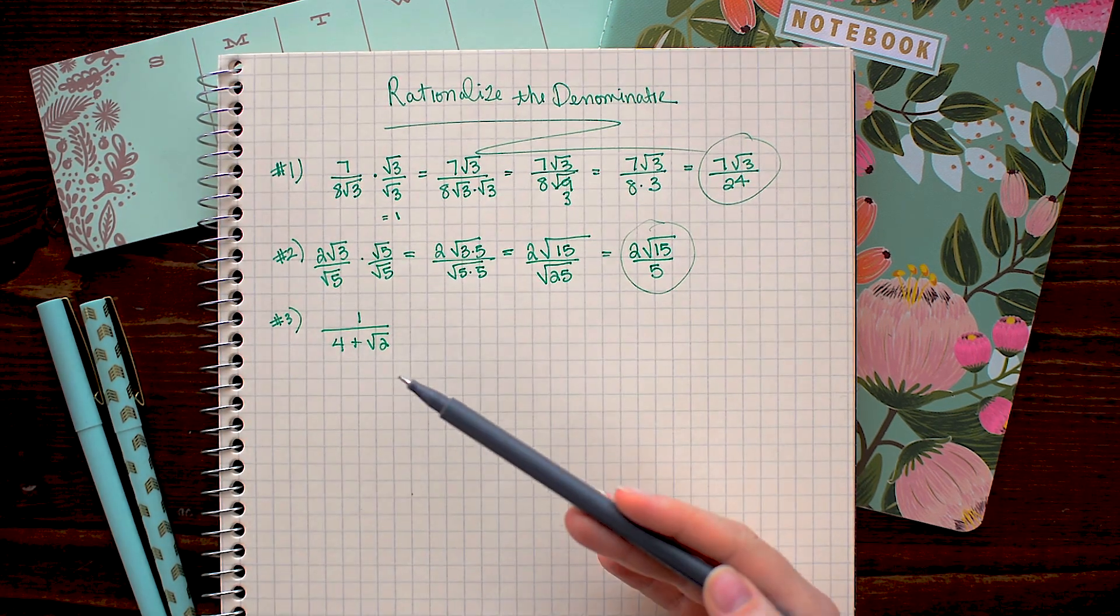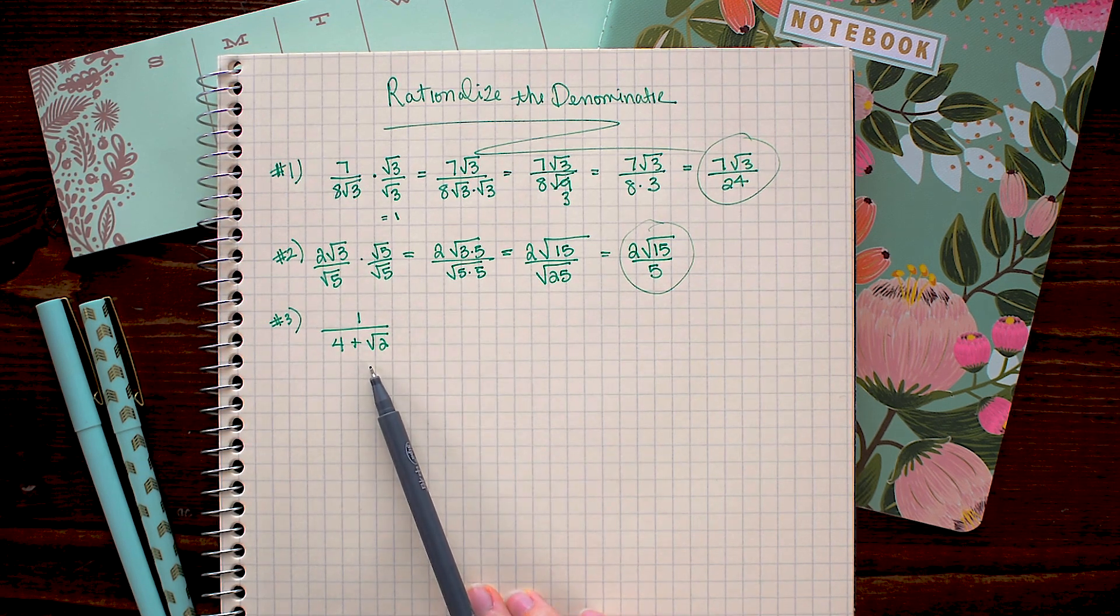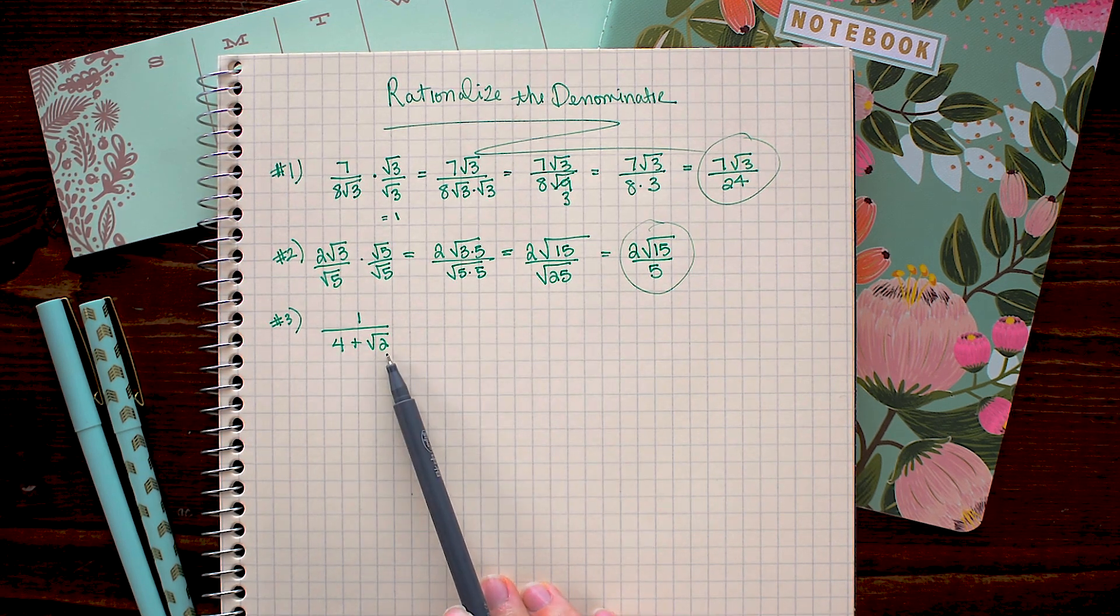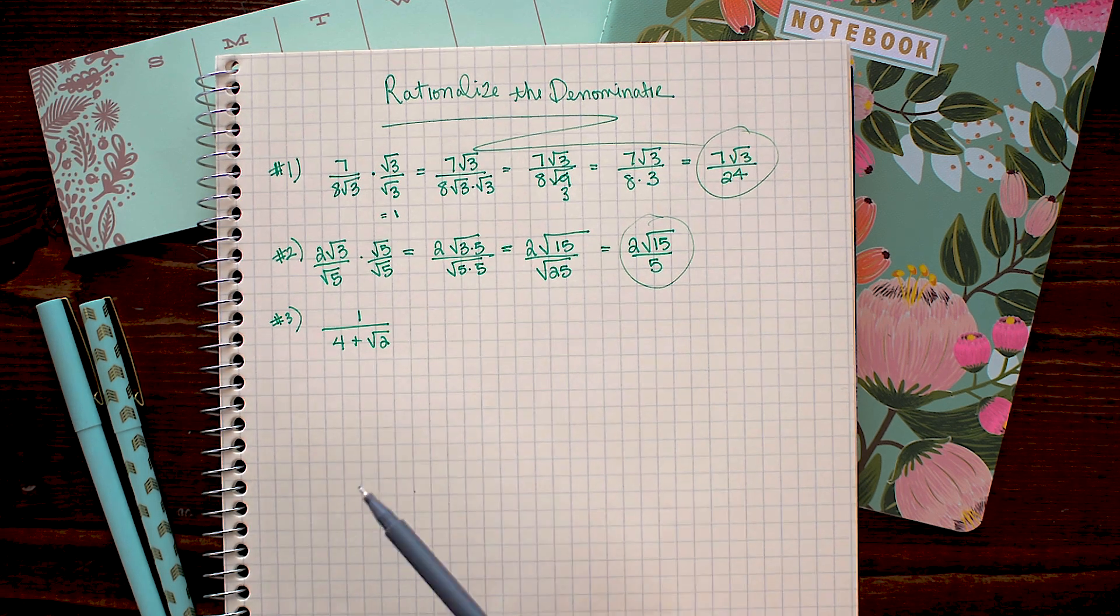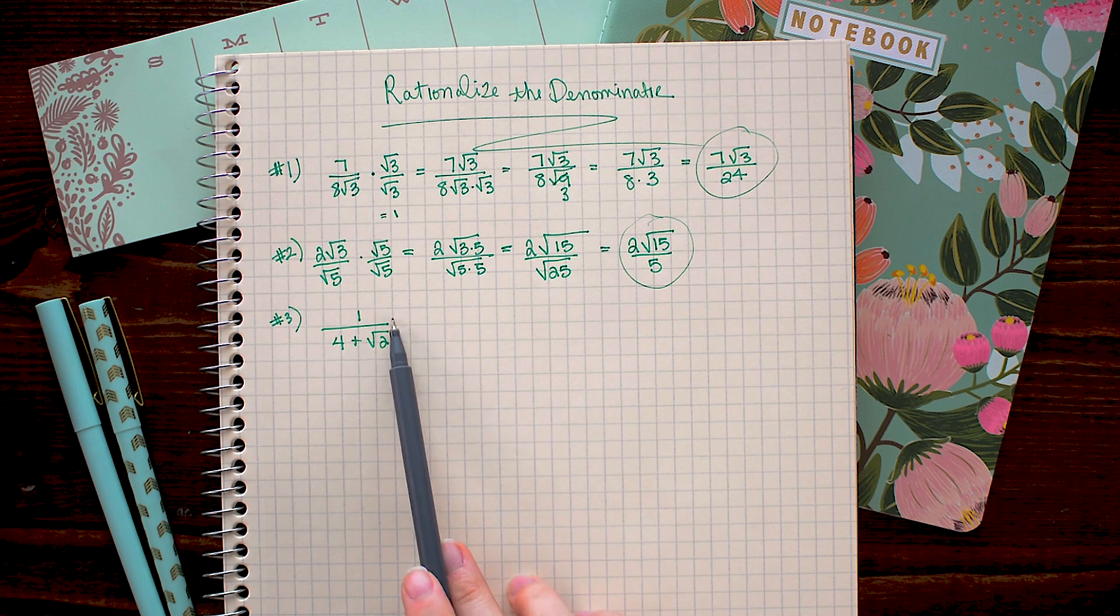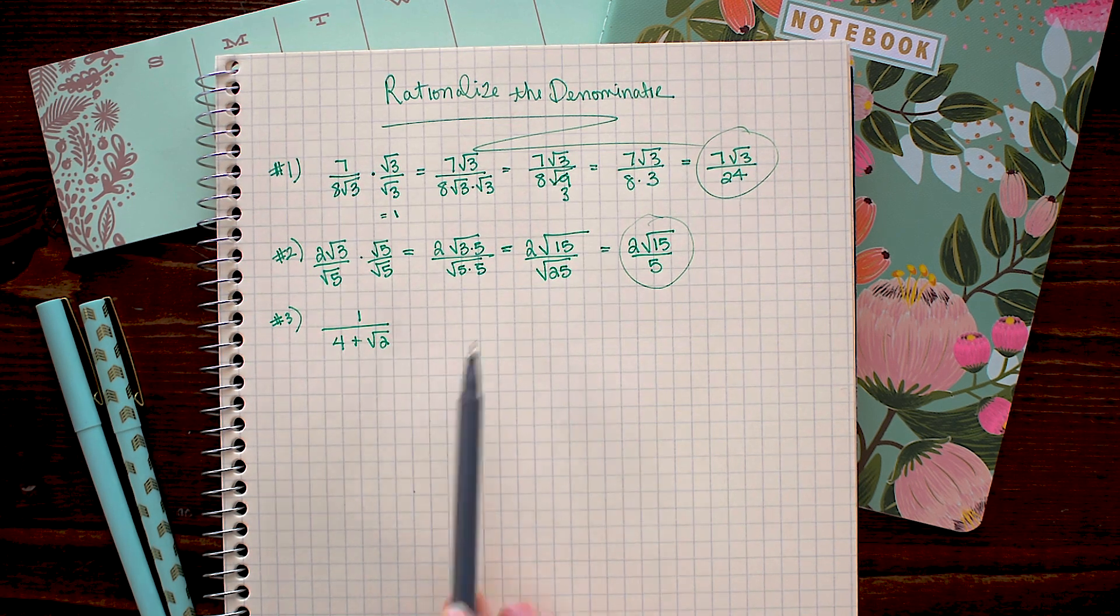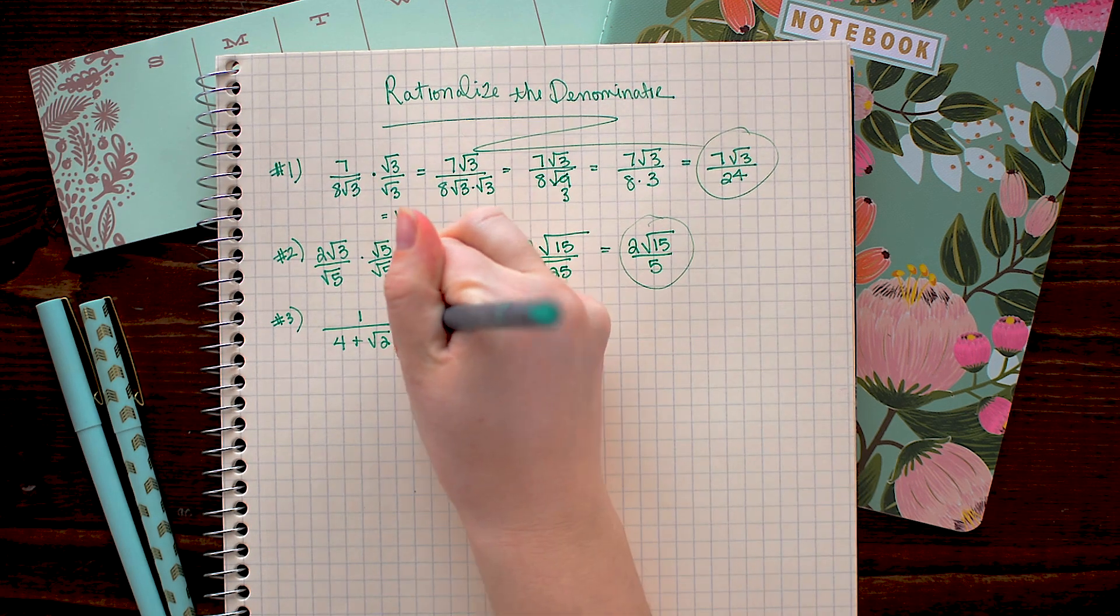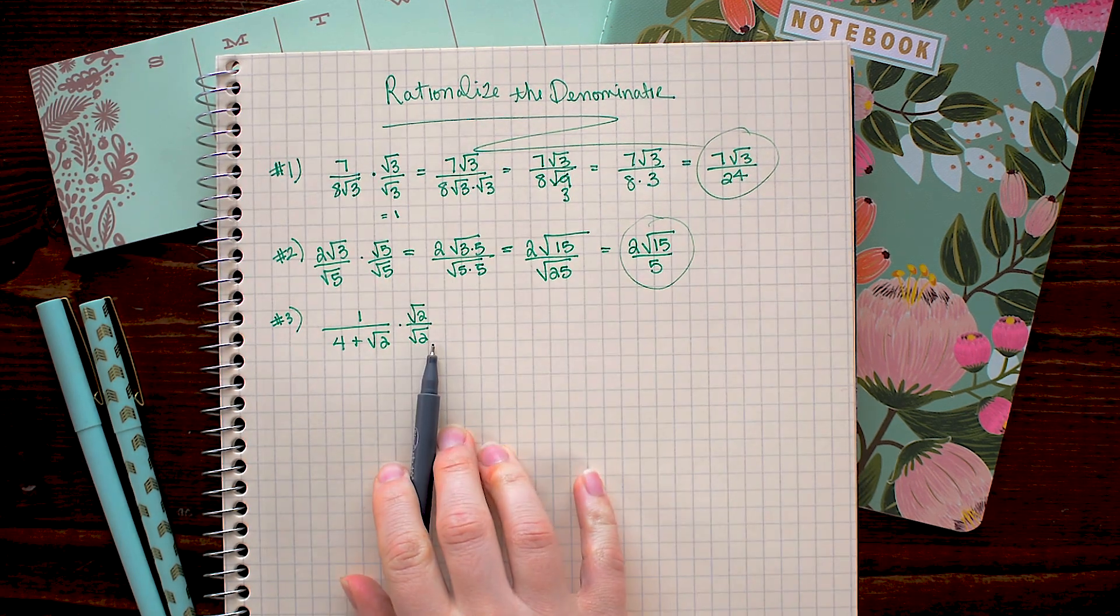Now this is a bit more of a tricky problem because we have not only a square root in the denominator, but we have that square root being added to a whole number. And this just makes it a little more difficult because no longer can we just multiply by square root 2 over square root 2. Let's go ahead and see what happens when we do that, and that will show us why we can't do this.